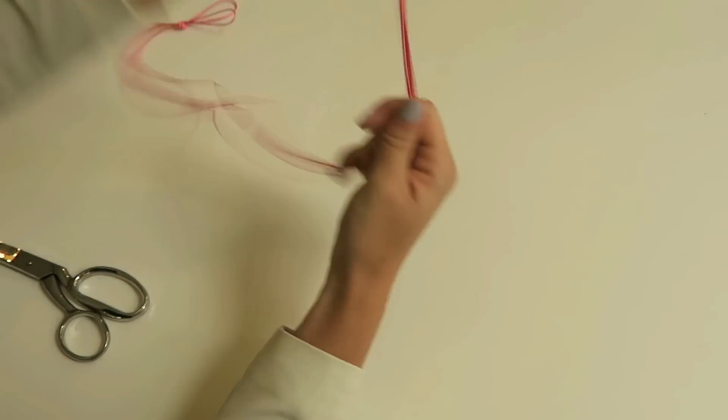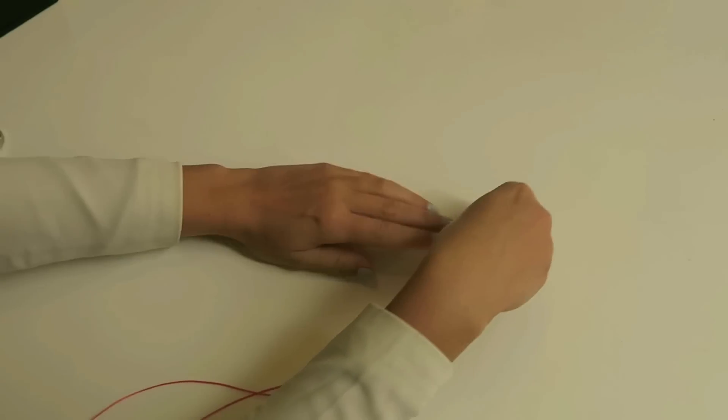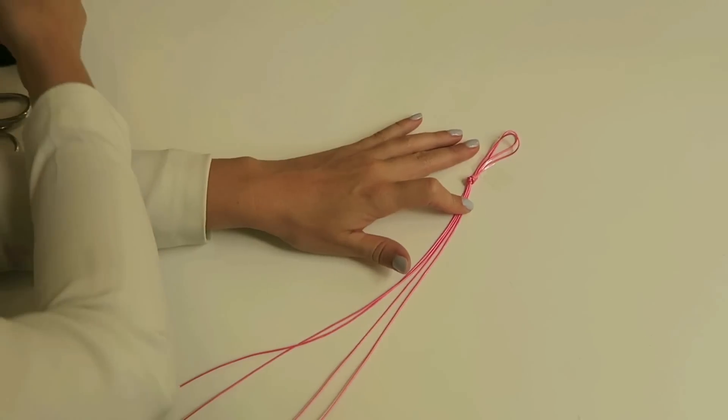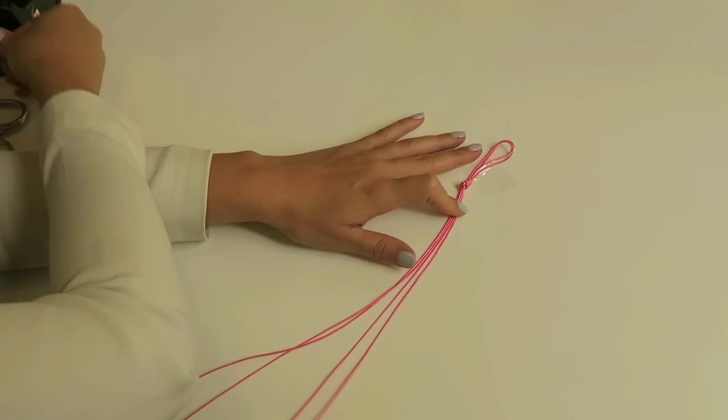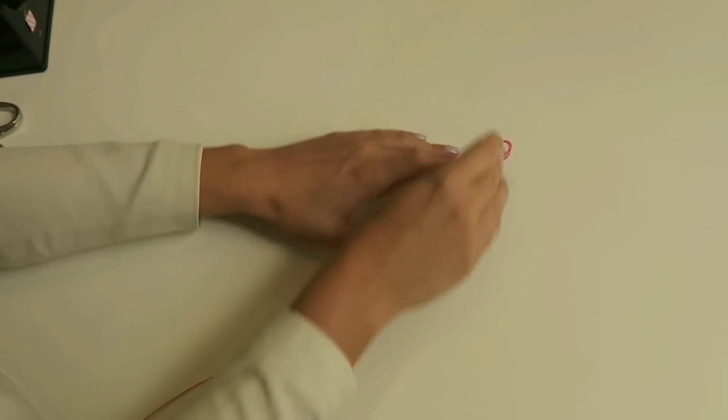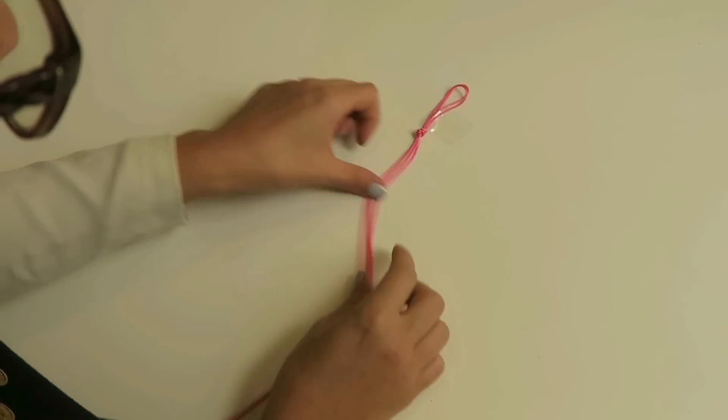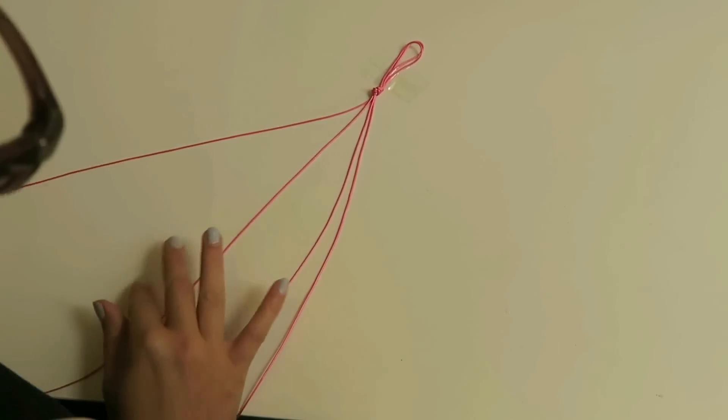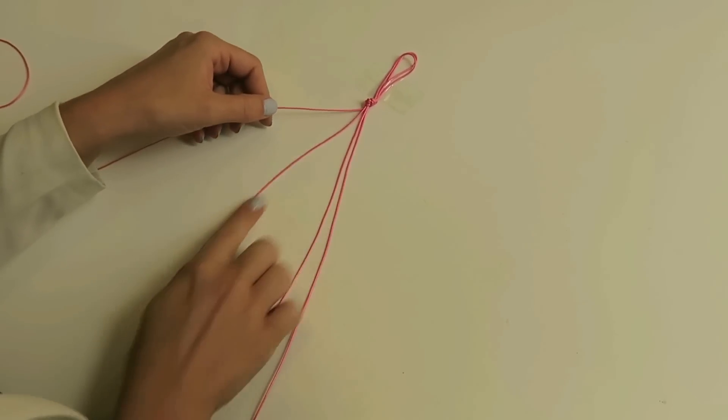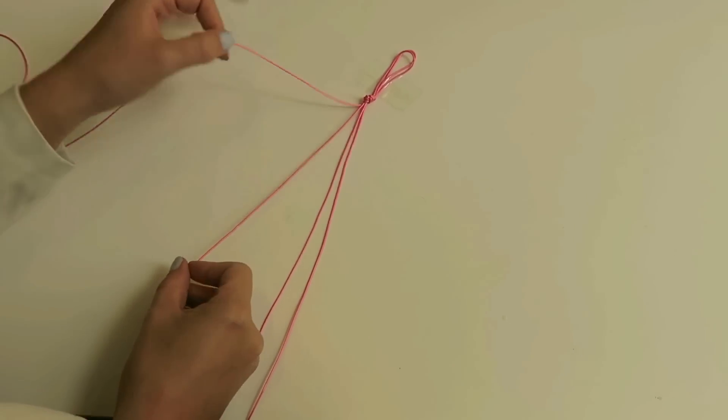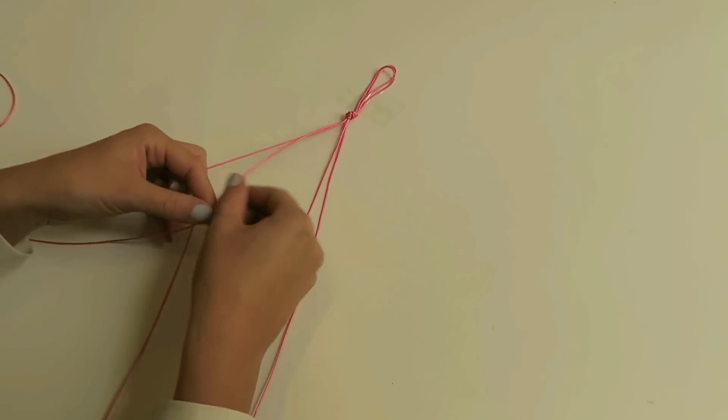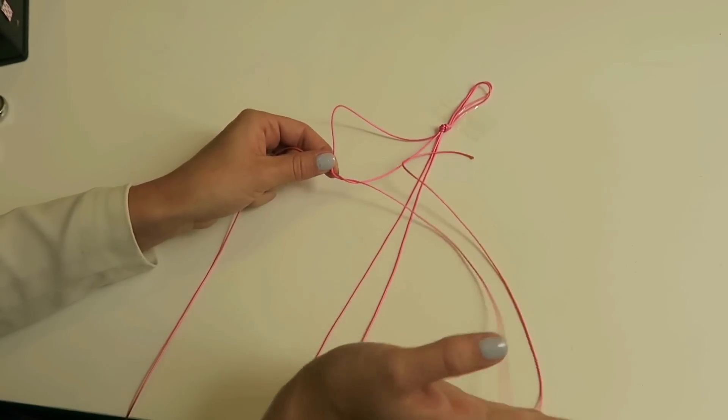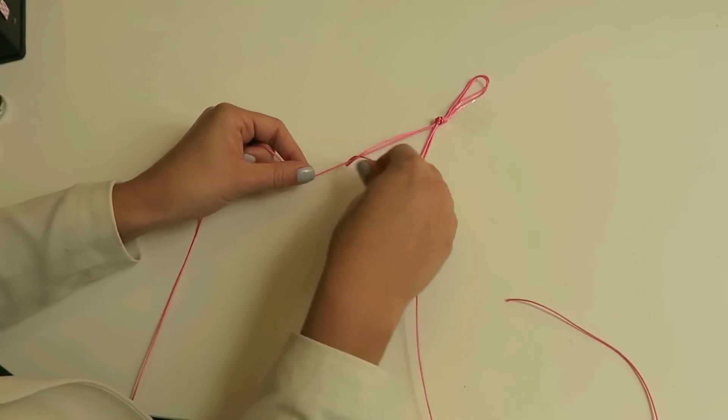And then cut this piece so you have 4 strands. We're just gonna use a really basic macrame knot to make the bracelet. You're gonna take the most left strand, and then you're gonna take the next strand and make all the knots with your left strand. Just put it over and then under and pull.